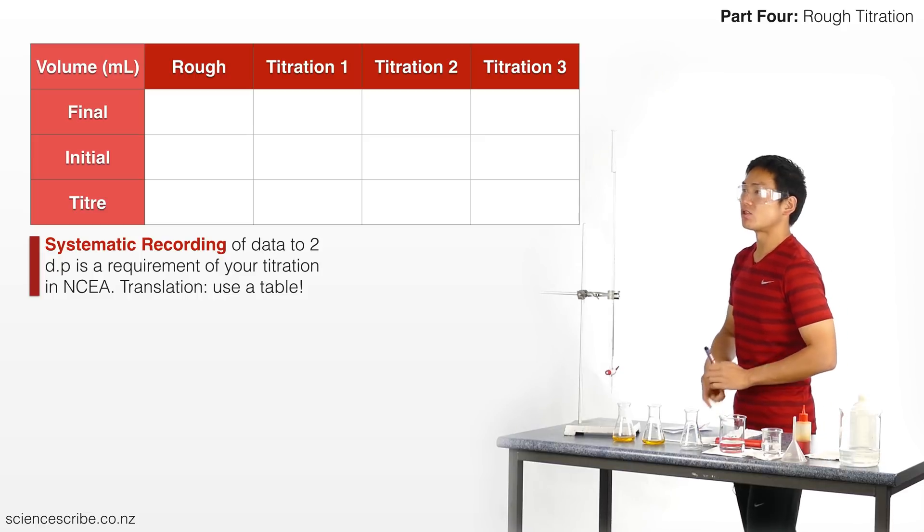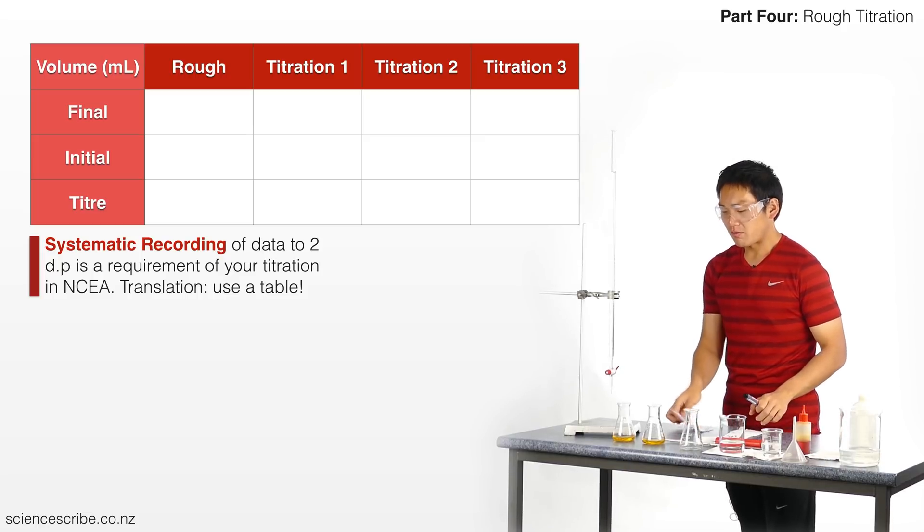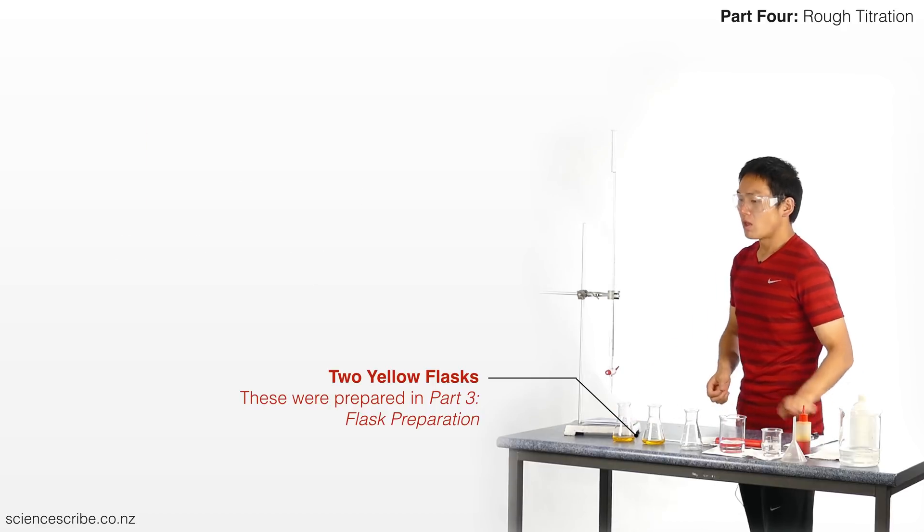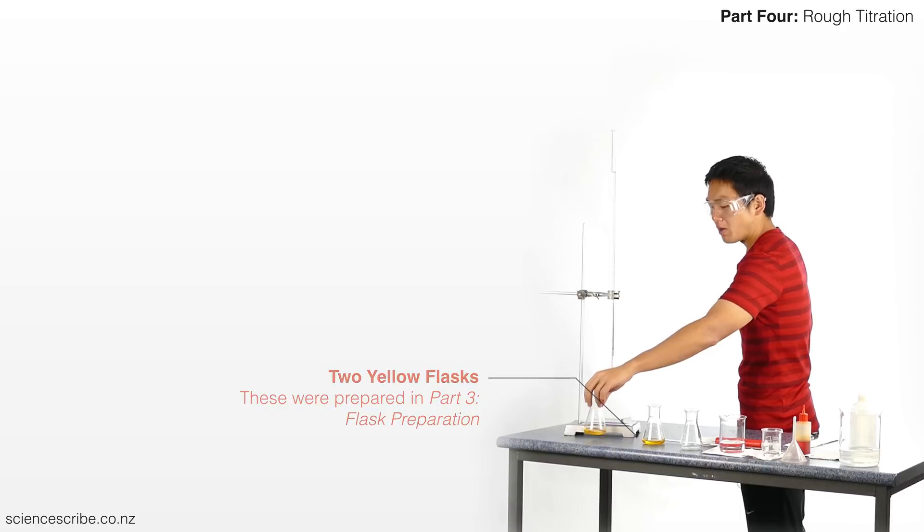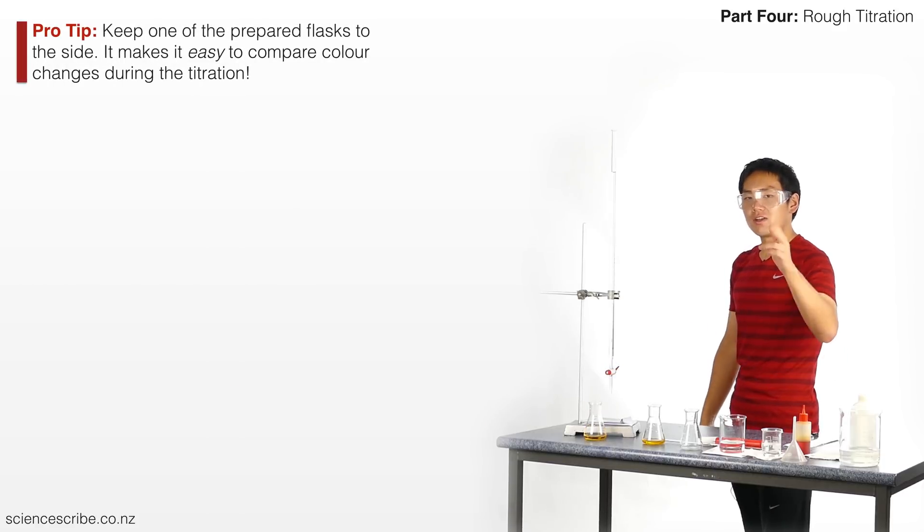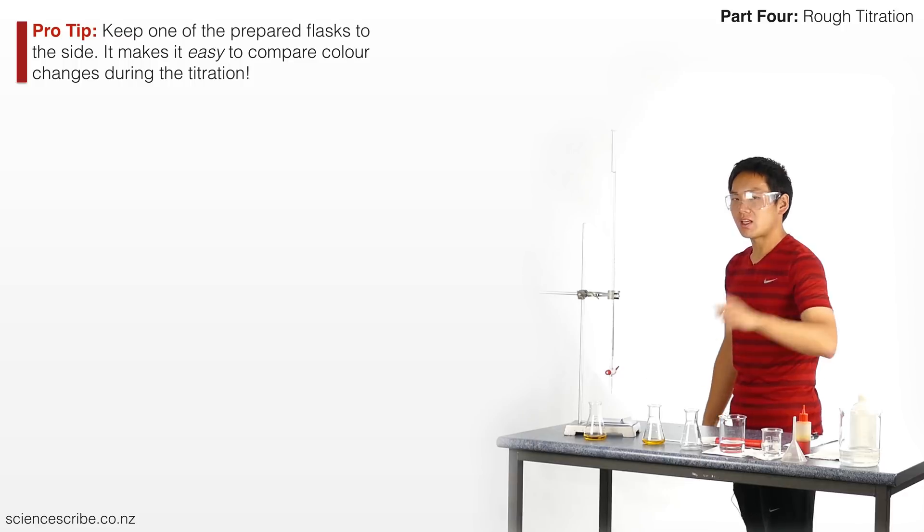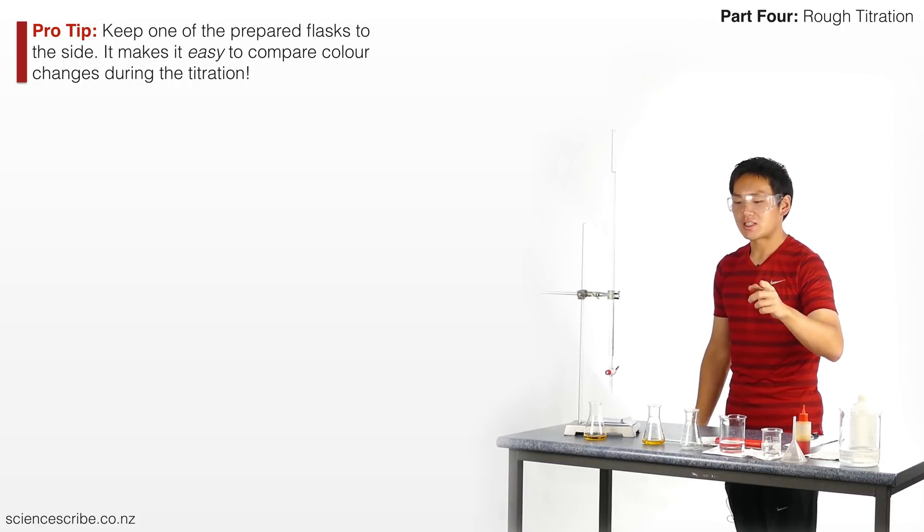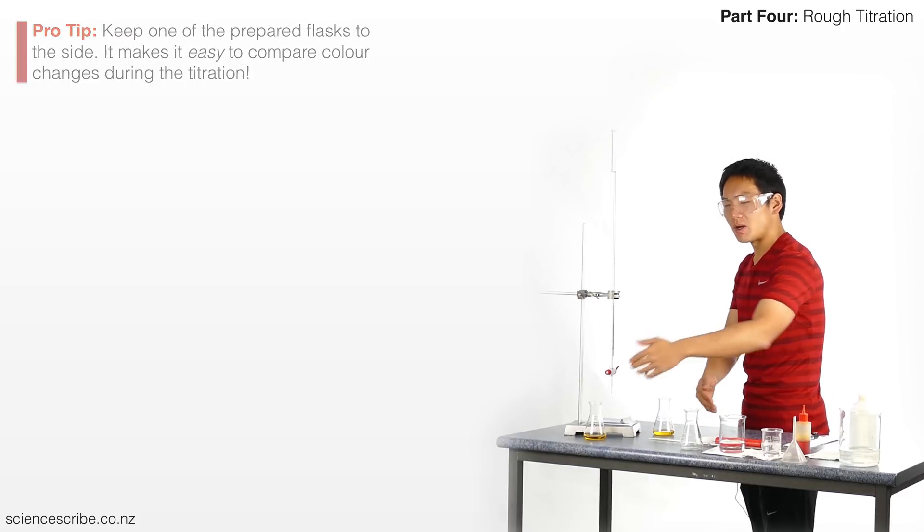Before I start, I want to double check. I also want to make sure of a few things. You'll notice that I've got two flasks prepared. I'm actually not going to use this one. I'm going to keep this off to the side. The reason I do that is because I want to keep this original yellow color because it's going to make it so much easier when I get closer to the end point to compare the color in this other flask to my original color.